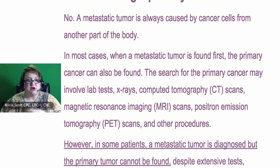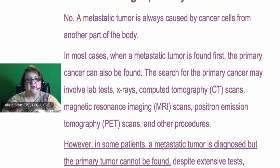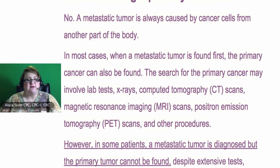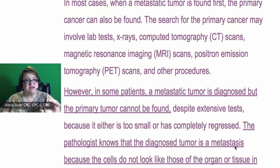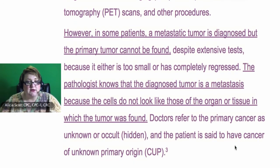What if they haven't determined from all of the tests what the primary is, but they know that the cells that are in the breast are not breast cells? They know it came from someplace else, but they haven't determined where. That's a metastatic breast — they know because they looked at the cells. Pathology tells them it's still a secondary cancer.